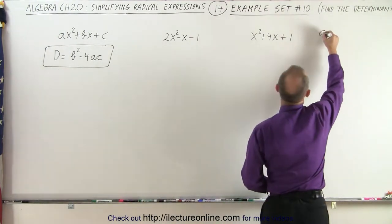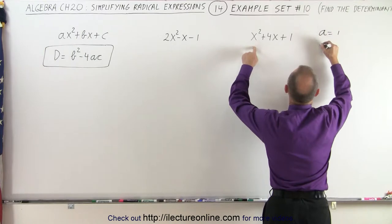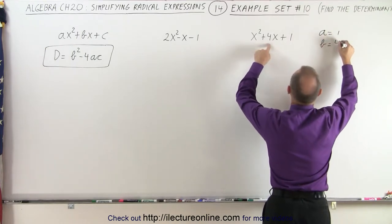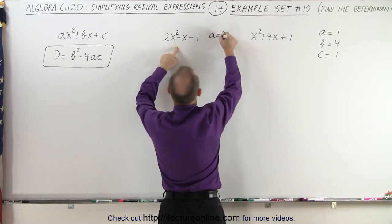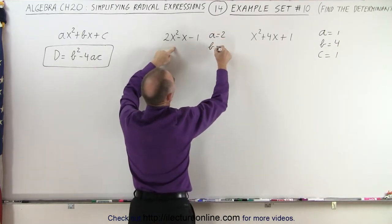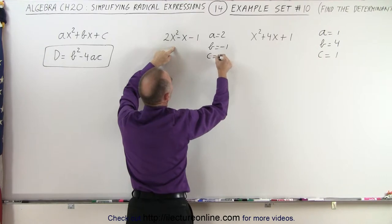So in this example a is equal to 1, b is equal to 4, and c is equal to 1. In this case a is equal to 2, b is equal to negative 1, and c is equal to negative 1.